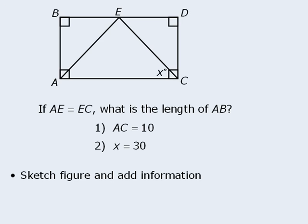The next tip is: sketch the figure and add information to the diagram. Since the geometric figure will appear on a computer screen, it's a good idea to sketch the figure on your scrap paper. This allows you to add any extra information that you deduce about the figure. In this example, we are told that sides AE and EC are equal. So once we sketch the figure, we can add notation to show that these two sides have equal length. Since these two lengths are equal, we can deduce that this is an isosceles triangle, which means the two base angles are equal.